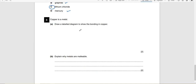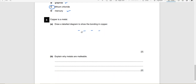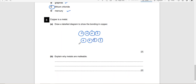Draw and label a diagram to show the bonding in copper. We draw the positive ions arranged in a lattice, with electrons moving around them — labeled as metal ions and delocalized electrons or sea of electrons.